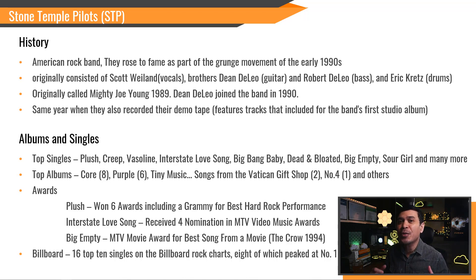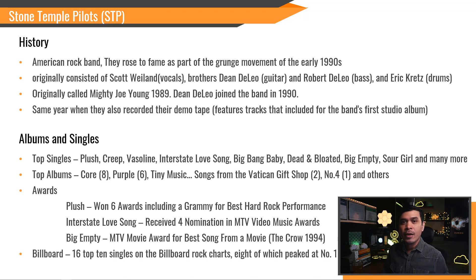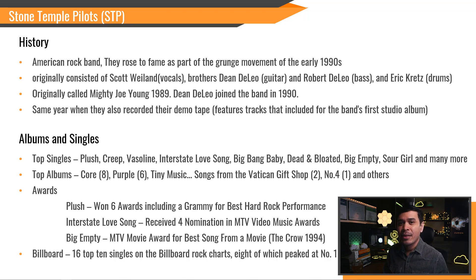Awards. Their most successful song is definitely Plush — it won 6 awards, including the Grammy Award for Best Hard Rock Performance and Billboard Music Award for Number 1 Rock Song of the Year. Interstate Love Song didn't win any award but was nominated for Best Alternative Video, Best Metal/Hard Rock Video, Best Group Video, and Best Cinematography at the MTV Music Awards. Big Empty won Best Song from a Movie in the film The Crow, released in 1994. The band has had 16 top 10 singles on Billboard charts, 8 of which peaked at number 1.